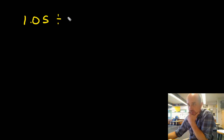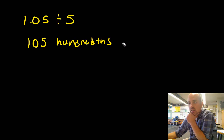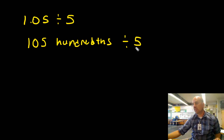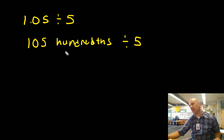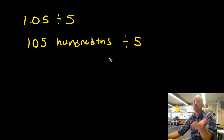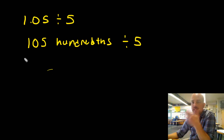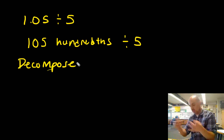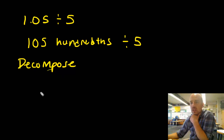Let's try another example: 1.05 divided by 5. That's 105 hundredths divided by 5. Now, I could count by fives to get to 105, but another way to do this is to decompose the numbers — take them apart and put them into little pieces.